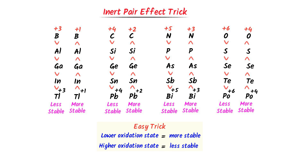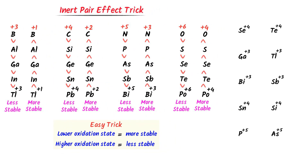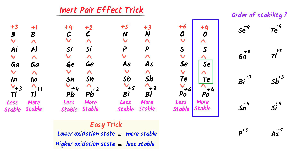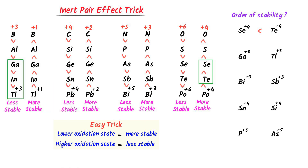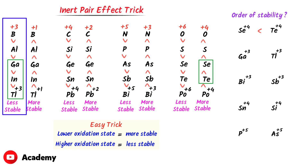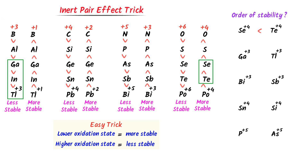Now consider these questions and determine the order of stability. Selenium and tellurium are from the oxygen family; the lower oxidation state (+4) is more stable, and stability increases down the group, so tellurium +4 is more stable than selenium +4. Gallium and thallium are from the boron family; the higher oxidation state (+3) is less stable and stability decreases down the group, so gallium +3 is more stable than thallium +3.